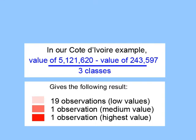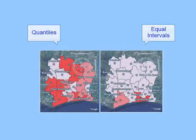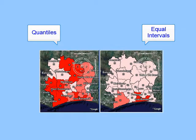You can see that this second method of classification gives a very different result. Be careful when choosing your map classification method — different methods will be useful for different types of data.